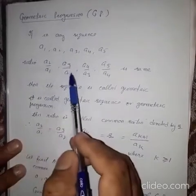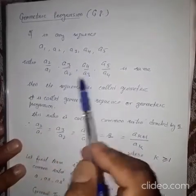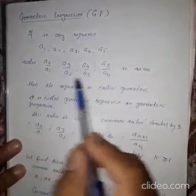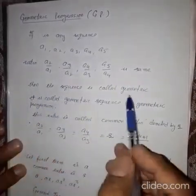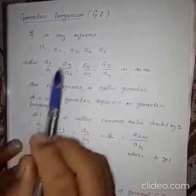If ratio of two consecutive terms, A2 upon A1, A3 upon A2, A4 upon A3, and so on, if it is same, then that sequence is called geometric.